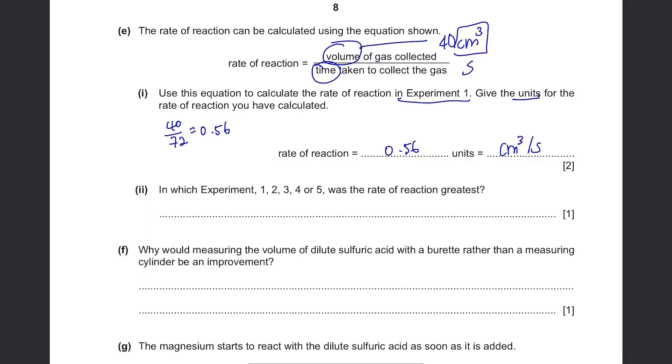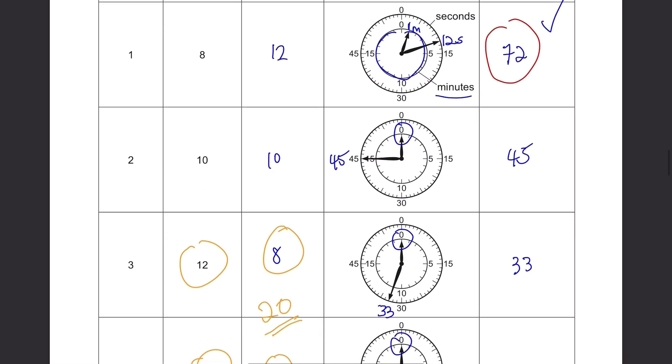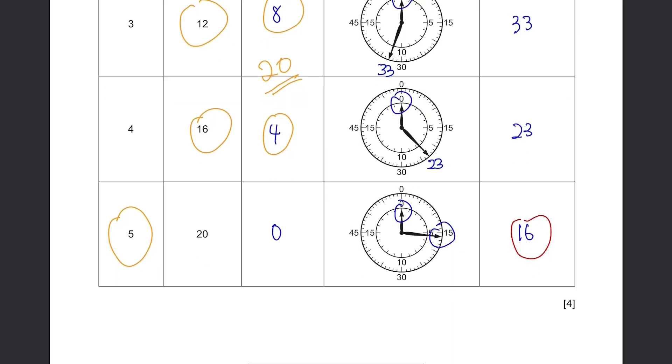In which experiment 1, 2, 3, 4 or 5 was the rate of reaction greatest? Since the volume of gas remains constant, it's just 40. Well, if you divide it with the smallest number, you will get the biggest rate of reaction as your answer. So look for the experiment that took the shortest time. And anyway, if you take the shortest time to reach the same result, it means that the rate is the fastest. From our table, experiment 5 took the shortest time.